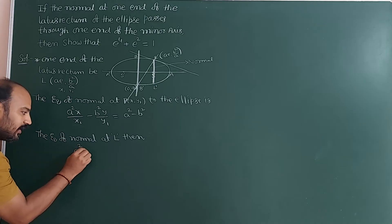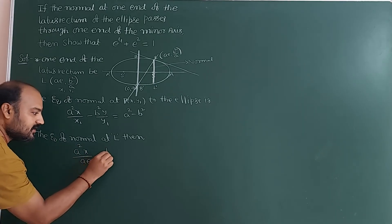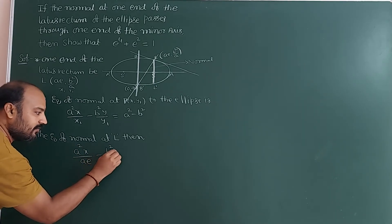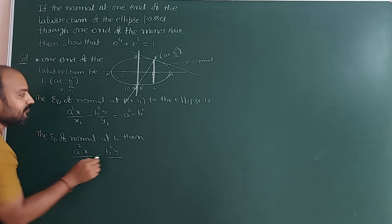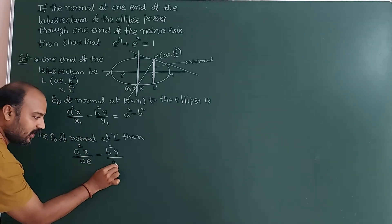Therefore the equation of normal at L becomes: a²x/(ae) − b²y/(b²/a) = a² − b².